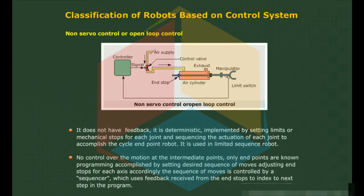There is no control over the motion at the intermediate points; only end points are known. Programming is accomplished by setting the desired sequence of moves and adjusting end stops for each axis. The sequence of moves is controlled by a sequencer, which uses feedback received from the end stops to index to the next step in the program.